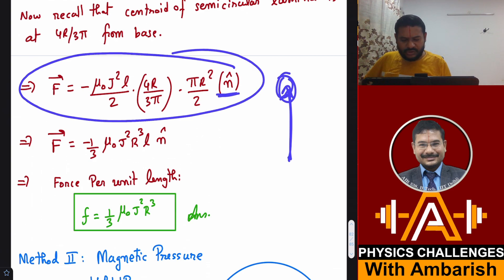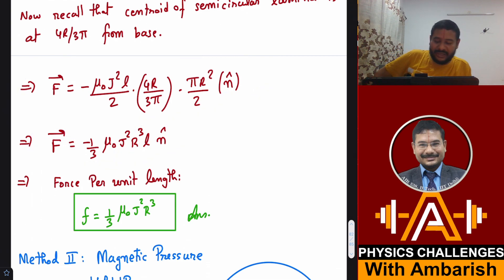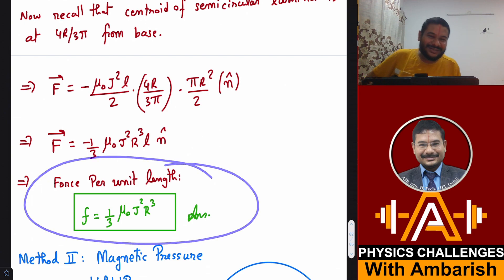You simplify it and divide by length because you want force per unit length. This is the result you get, one third mu naught pi J squared R cubed, which matches the answer given at the back. That was the cute method using the concept similar to center of mass.